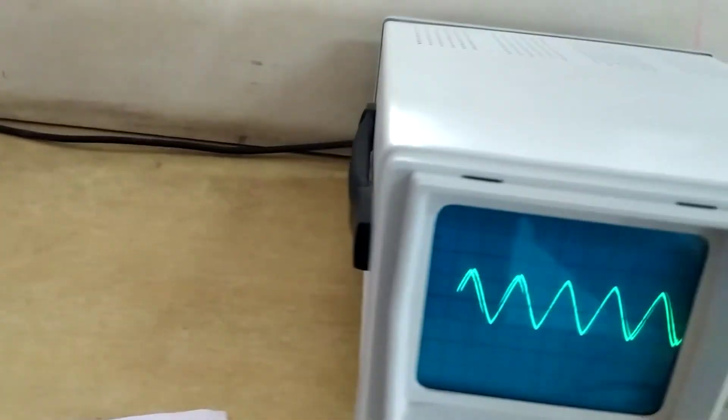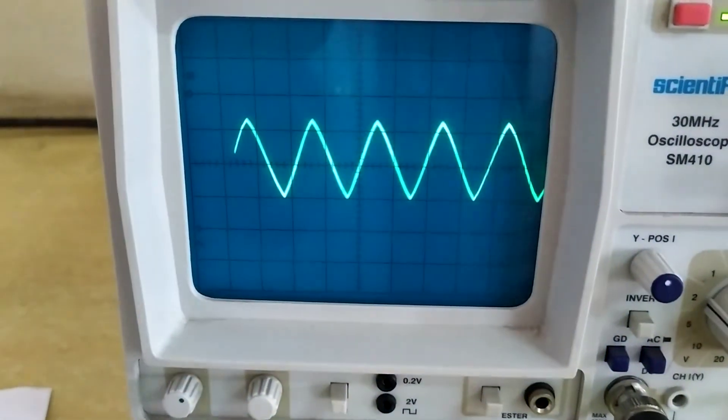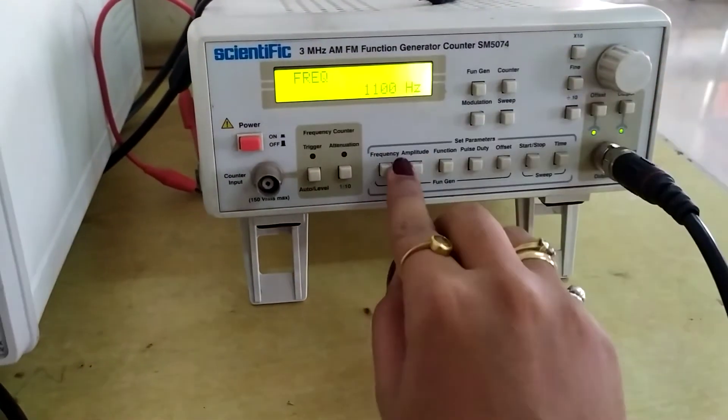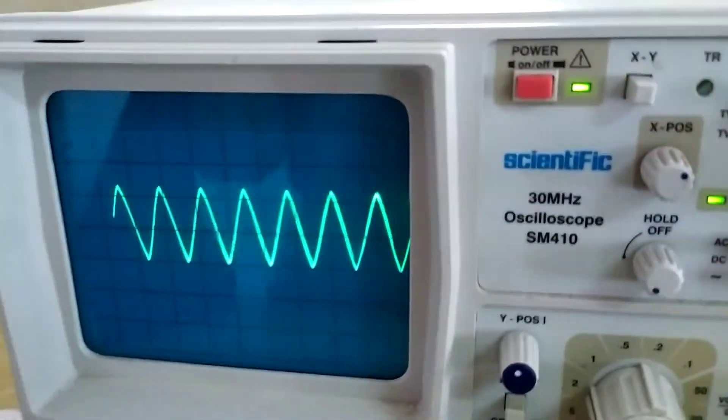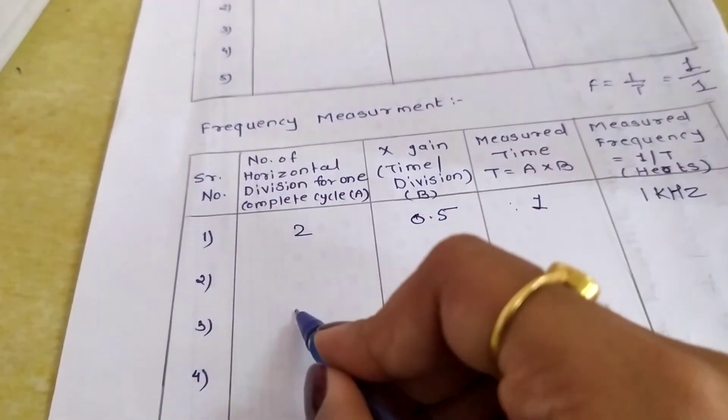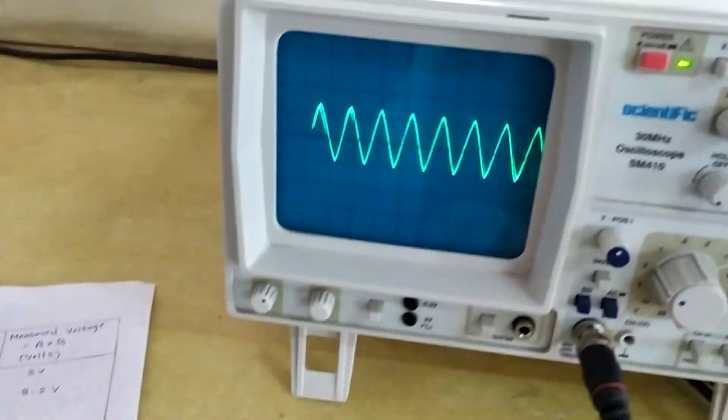For frequency, we will use the formula F equals 1 upon T. So F equals 1 upon 1 millisecond. The frequency is 1 kilohertz. The frequency of these waves is 1 kilohertz. Likewise, we will change the frequency from the function generator and measure the next value. This is our next practical. Thank you.